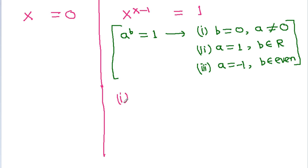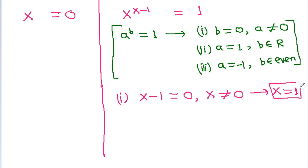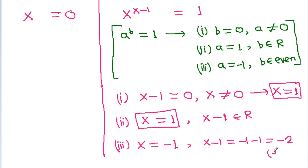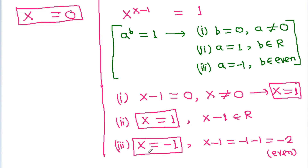So the first solution will be x minus 1 is equal to 0 and x not equal to 0, giving x is equal to 1. For the third solution, x is equal to minus 1 is also a solution. So we get x is equal to 0, x is equal to 1, and x is equal to minus 1.